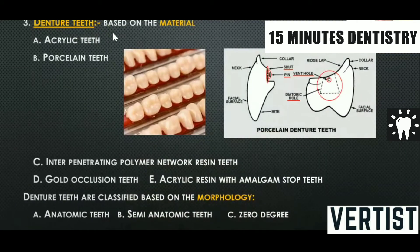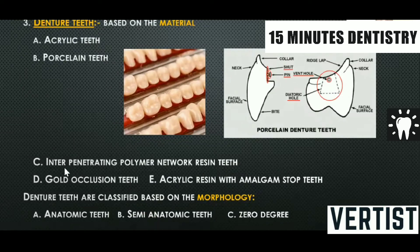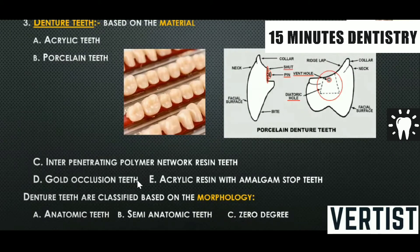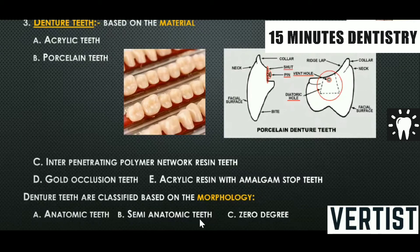The denture teeth can be classified based on material — either acrylic type or porcelain type. There are also types like interpenetrating polymer network resin teeth, gold occlusion teeth, and acrylic resin with amalgam stock teeth. Denture teeth can also be classified based on cuspal angles or morphology: anatomic teeth, semi-anatomic teeth, and zero-degree teeth.